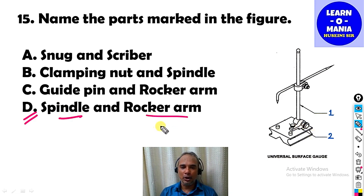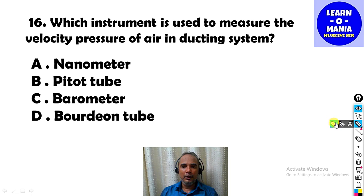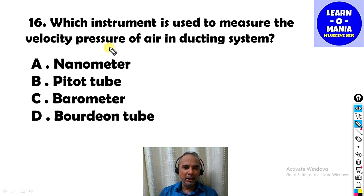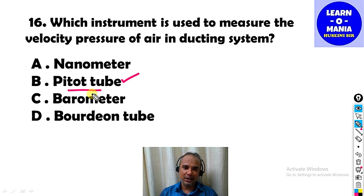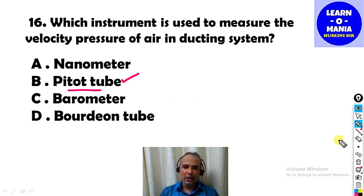Next MCQ: Which instrument is used to measure the velocity pressure of air in a ducting system? The answer is option B — pitot tube. Using a pitot tube and manometer, we can measure the air velocity pressure inside a duct. A related video on static pressure, velocity pressure, and total pressure is available.